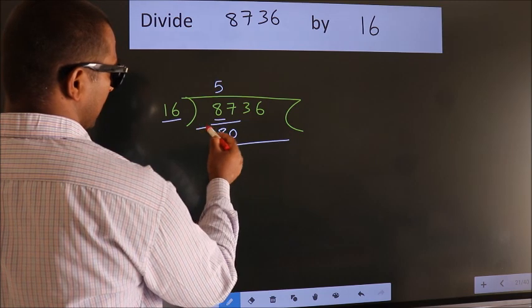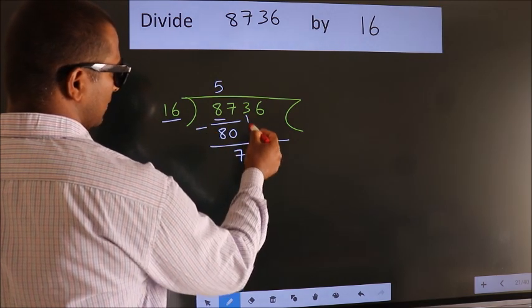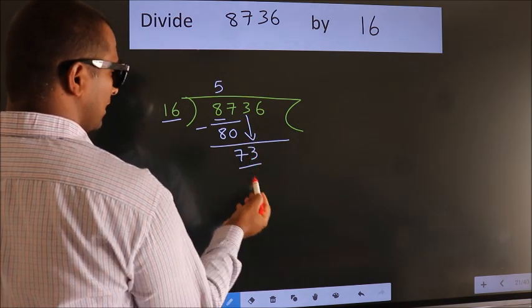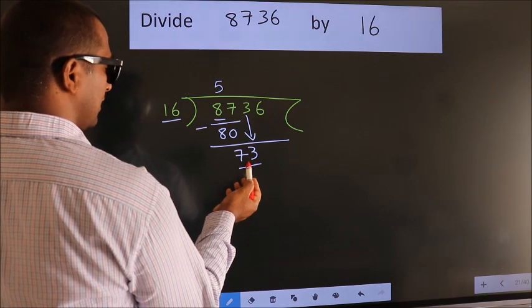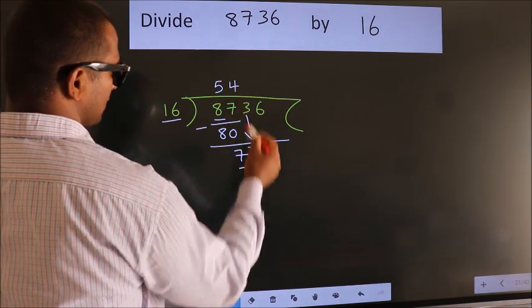Now we should subtract. We get 7. After this, bring down the beside number. So 3 down, so 73. A number close to 73 in 16 table is 16 fours, 64.